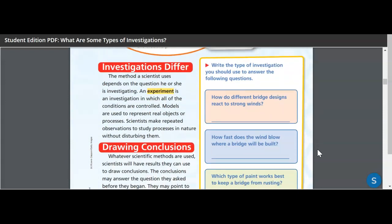So investigations differ. The method a scientist uses depends on the question he or she is investigating. An experiment, that's our vocabulary word, it's highlighted, is an investigation in which all the conditions are controlled. An experiment is set up so specifically. An experiment is planned. It's precise. It's not random. You don't just go in and go, okay, well, let's just do this because I think we should. It's going to be fun. No, it's planned. It's designed. So all the conditions are controlled. They're pre-planned. Models are used to represent real objects or processes. Scientists make repeated observations to study processes in nature without disturbing them.